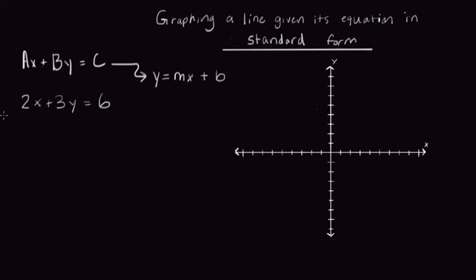So let's go ahead and try that on this one. I noticed that in y equals mx plus b, y is all by itself. So I want to try to get y all by itself here. I'm going to start by subtracting 2x from both sides.